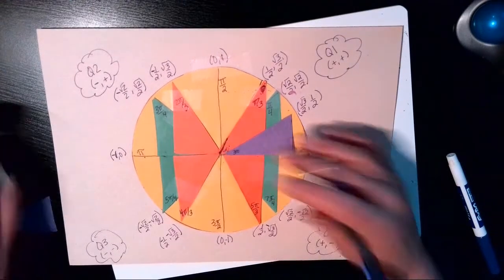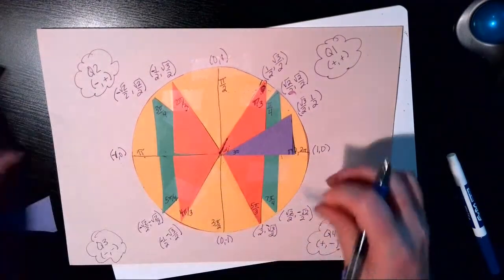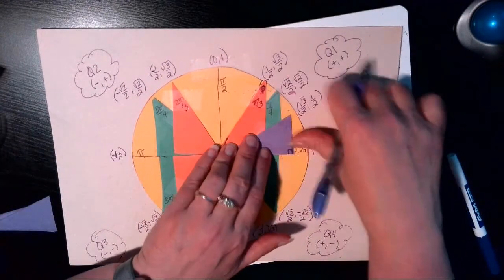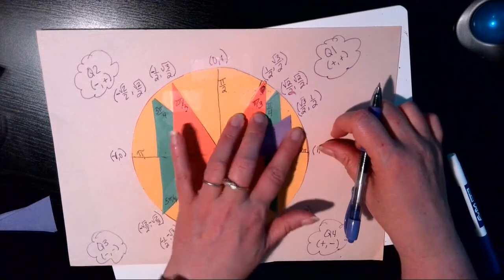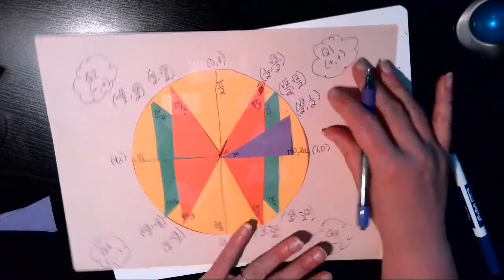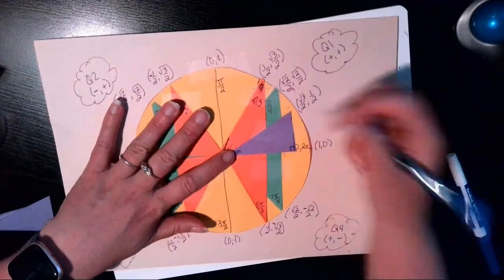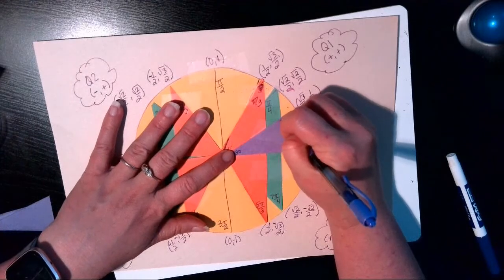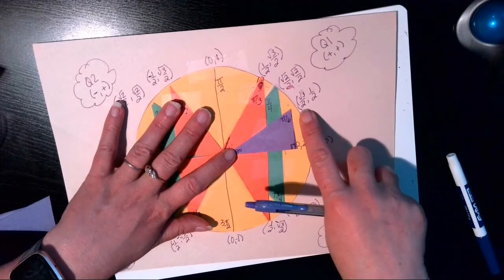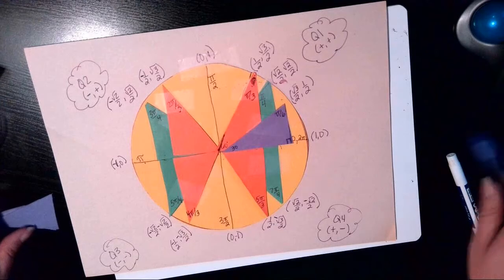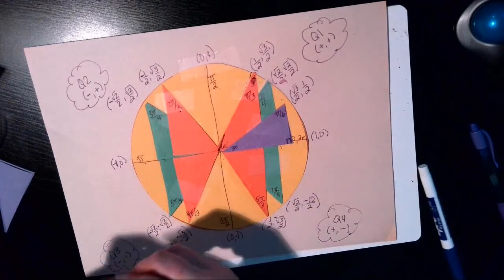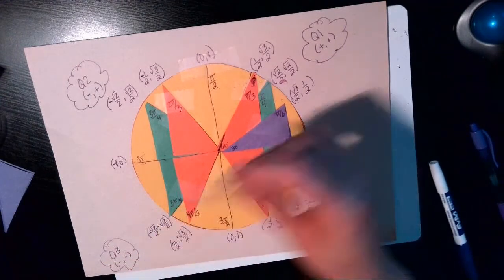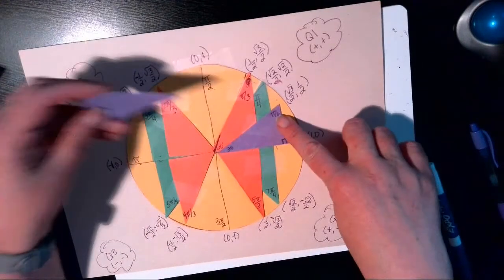So if I tape this angle here into place, this is pi over 6, and that's our root 3 over 2 comma 1 half angle. That's our pi over 6.